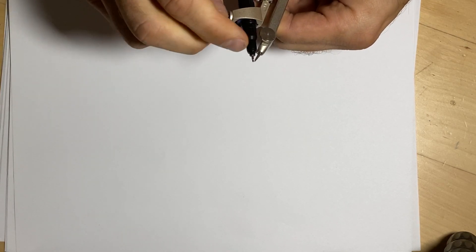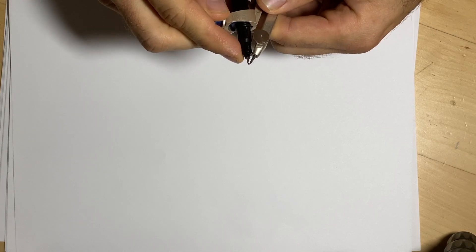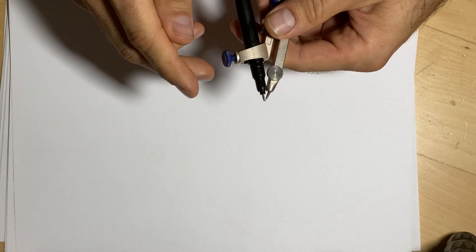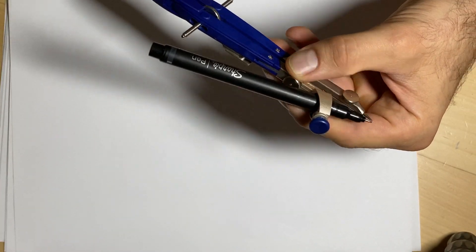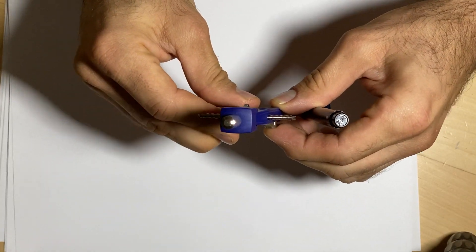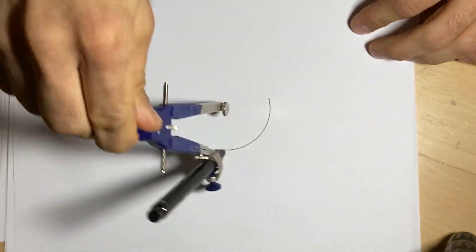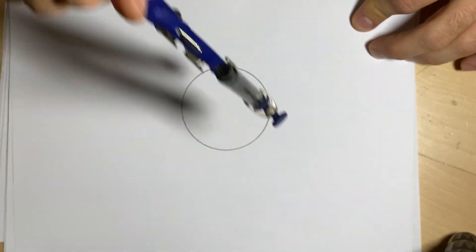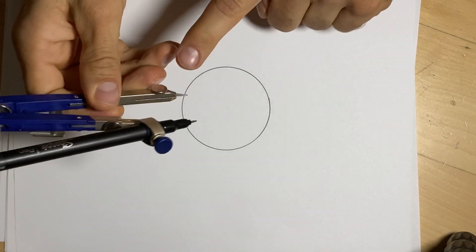You want to line up your compass point with the point of your pencil or pen. I'm going to try to use pen here so that you can see a bit more clearly. We're going to be drawing what we call the seed of life. First you start with one circle.